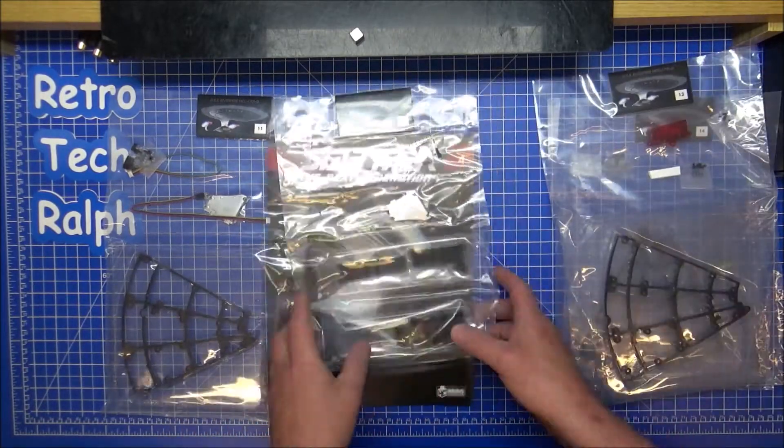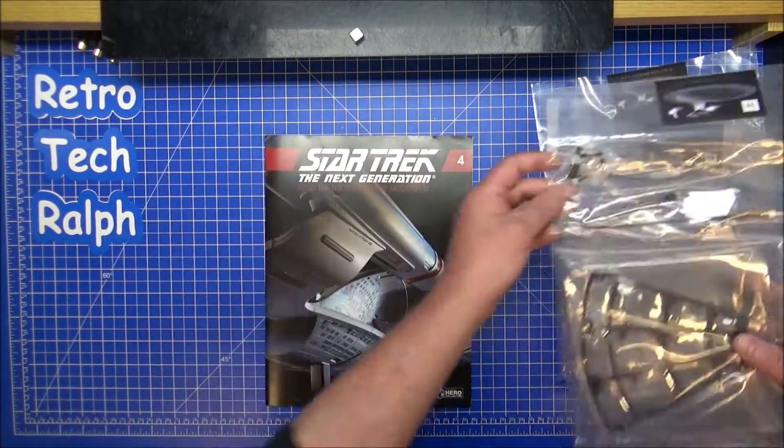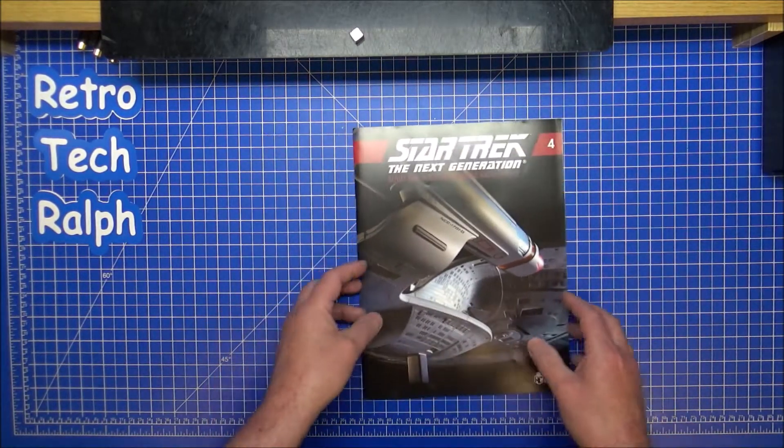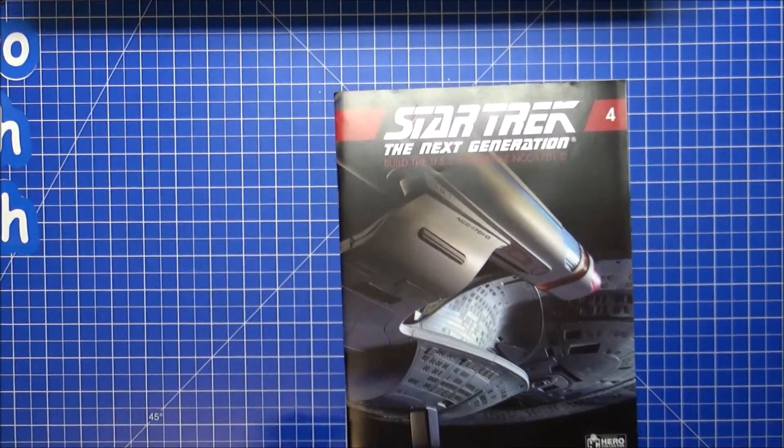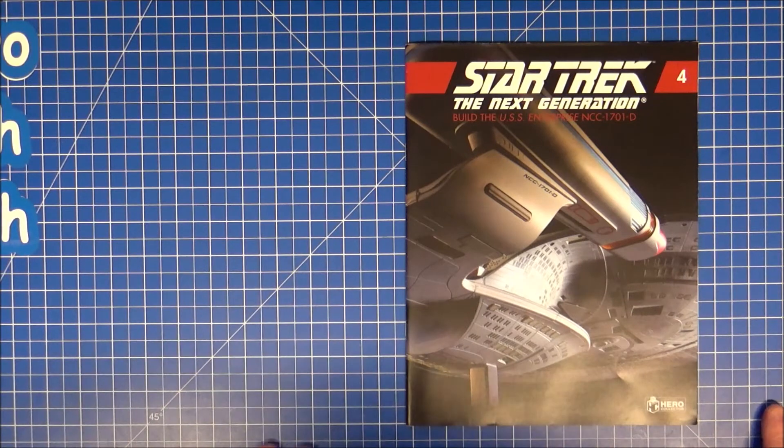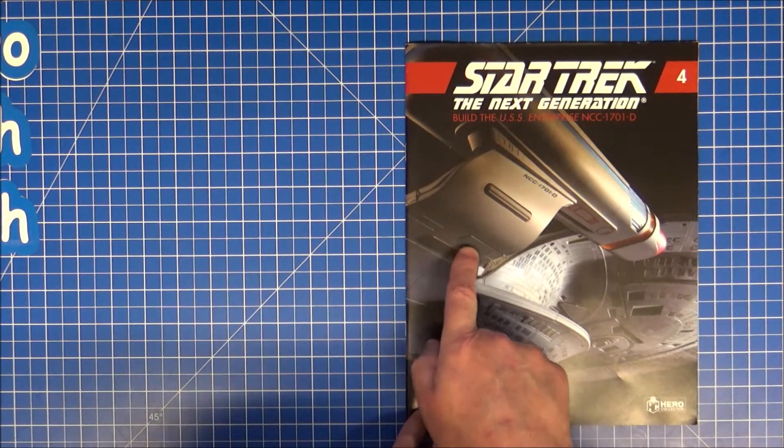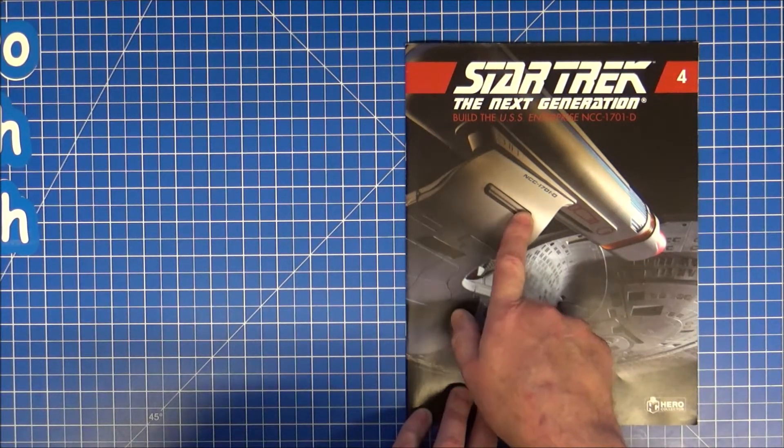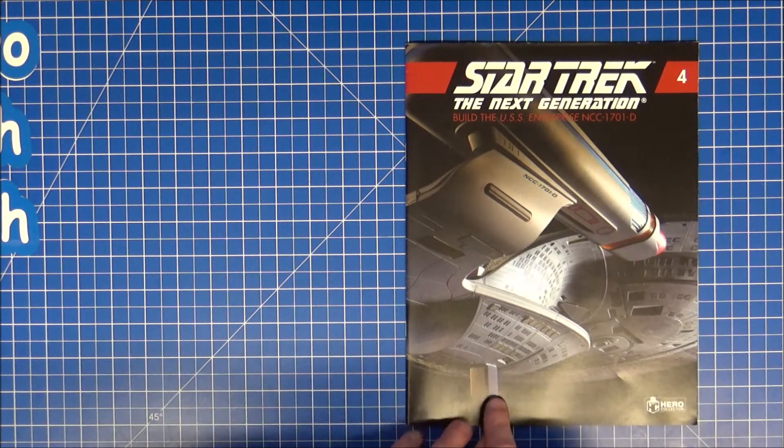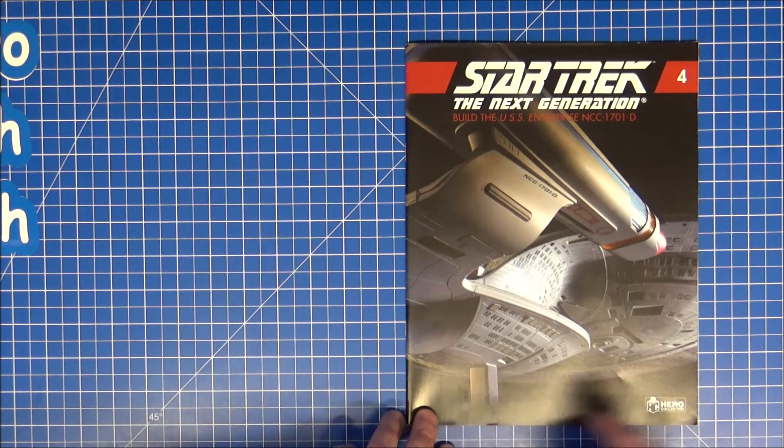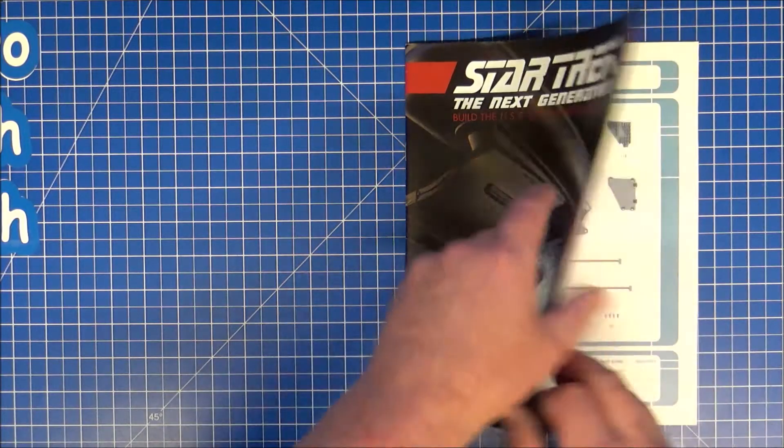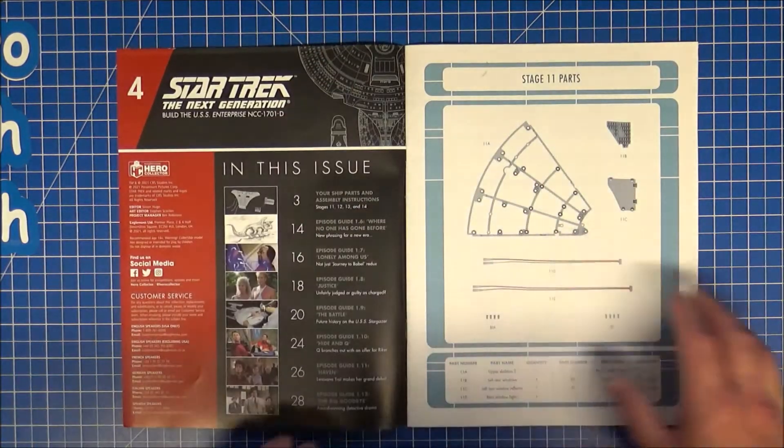So we're going to put these to one side for a moment, and we'll have a look at the magazine while we're here. We have another picture of the Enterprise. You can tell the parts here, that's a little part that will go the same as the phaser arrays on the back that we just did on the last episode.